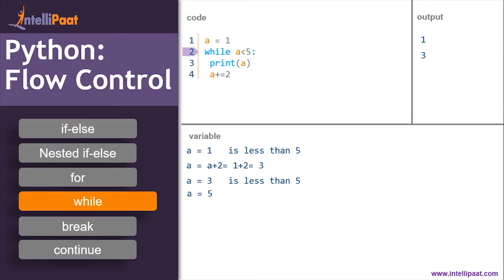Increment a by two again — a becomes five. Check the condition: is five less than five? No — the condition is false. So we exit the loop. The final output is one and three.